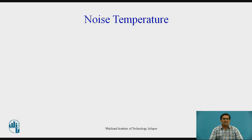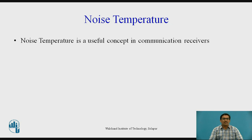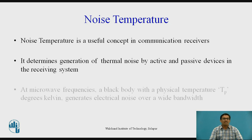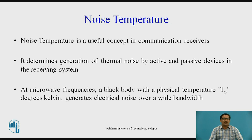Noise Temperature: Basically, in satellite communication, there are two parts — one is a transmitter and the second one is a receiver. This noise temperature is calculated at the receiver side. It determines generation of thermal noise by active and passive devices in the receiving system. At microwave frequency, a black body with a physical temperature Tp degrees Kelvin generates electrical noise over a wide bandwidth. For the calculation of noise temperature, we want to calculate the thermal noise as well as the physical temperature Tp.